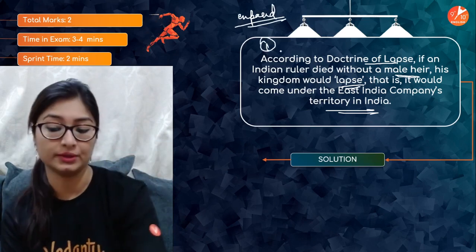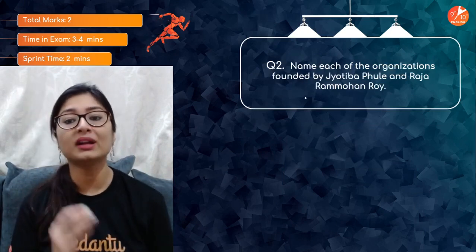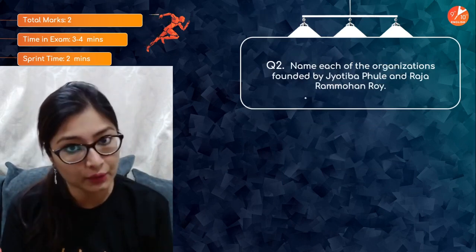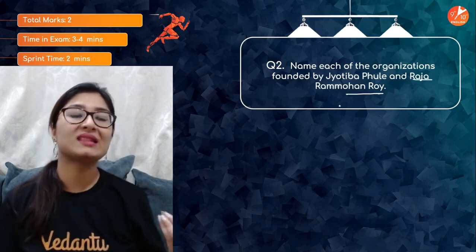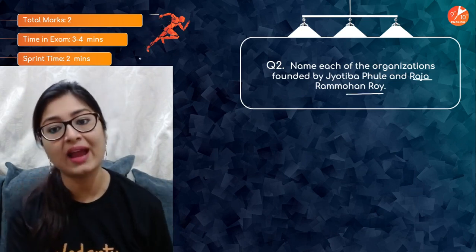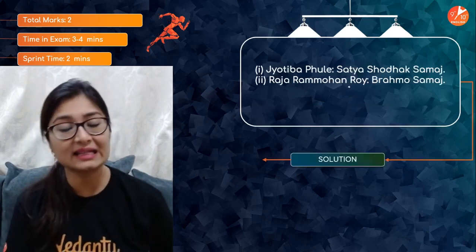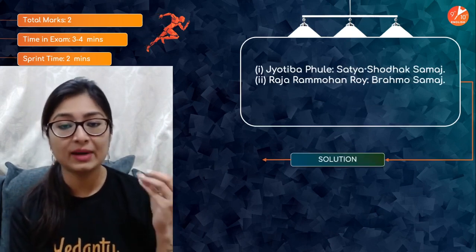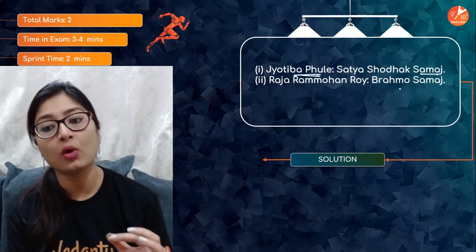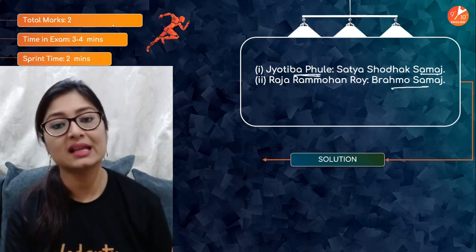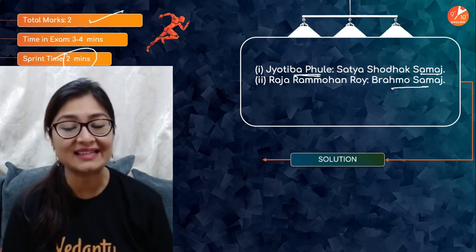Moving on to the second question: Name the organizations founded by Jyotiba Phule and Raja Ram Mohan Roy. We know that Raja Ram Mohan Roy worked towards monotheism and awareness, and to abolish the Sati system. Jyotiba Phule worked towards the education of women and the socially backward classes. The organizations were: Satya Shodhak Samaj for Jyotiba Phule, and Brahmo Samaj founded by Raja Ram Mohan Roy. This is again a two-marker question, finished well within two minutes.